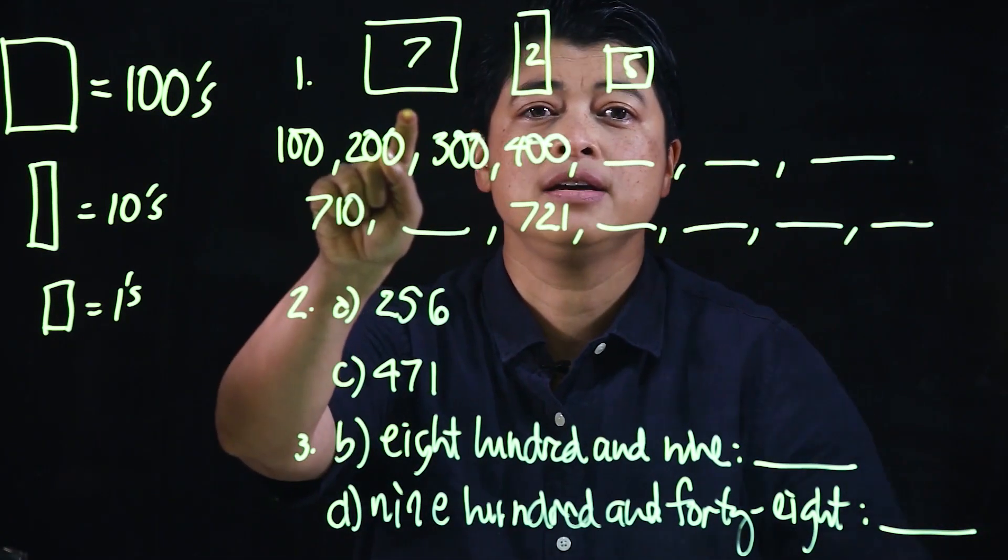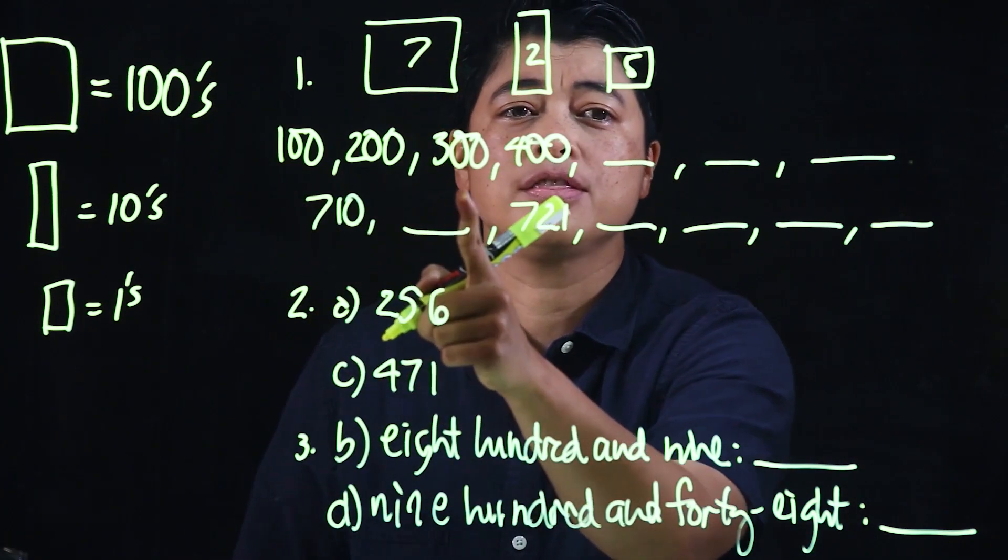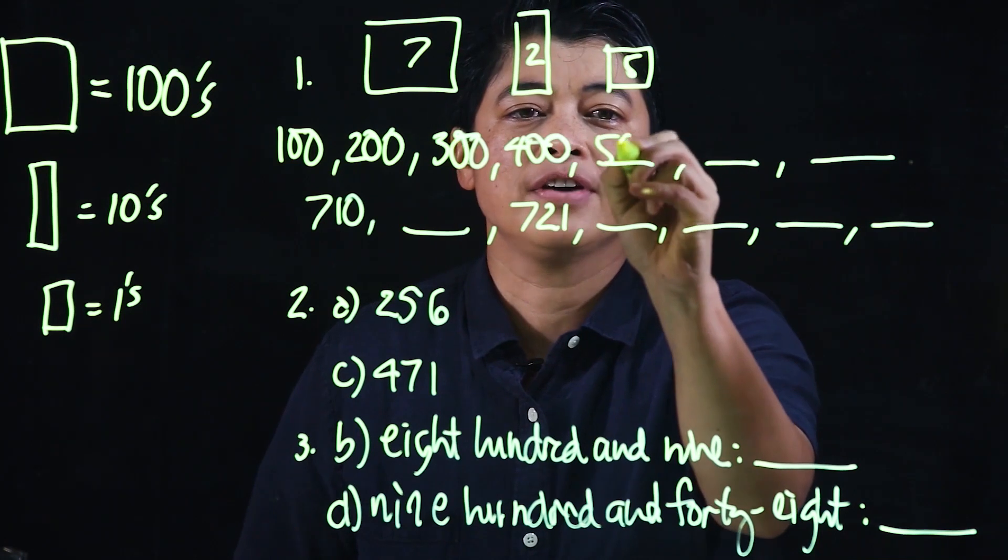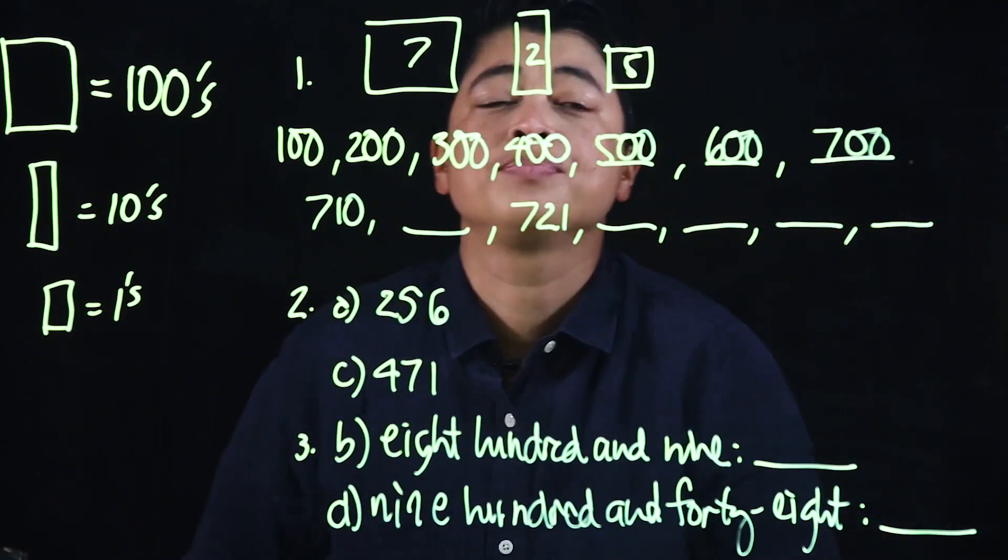So we have seven one-hundreds, which means one-hundred, two-hundred, three-hundred, four-hundred. Skip count, meaning five-hundred, six-hundred, seven-hundred.